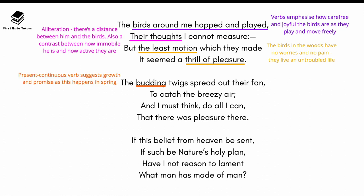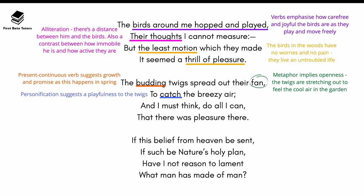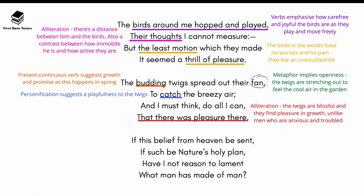In the fifth stanza, 'budding twigs' uses a present continuous verb suggesting growth and promise — what happens in spring. The phrase 'spread out their fan' is a metaphor implying openness, as the twigs stretch out to catch the breezy air — a personification suggesting playfulness, as if yawning and spreading their limbs. The alliteration of 't' in 'there was pleasure there' illustrates that the twigs are blissful in growth, unlike humanity, which tends to be anxious and troubled.